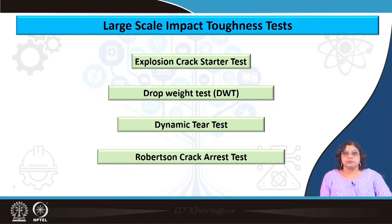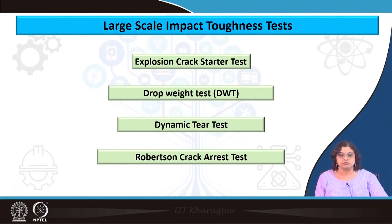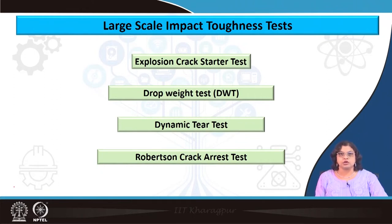When we talk about large scale impact toughness tests, practically we look for bigger specimens — of equivalent size to the components used in service. For lab scale tests, the Charpy impact test is mostly used, or sometimes Izod, which is equivalent to Charpy. But for large scale tests, we need a bigger block of material to find the properties of the actual test component. Particularly for brittle failure, the size or volume of the component is a real issue, since properties from smaller specimens often do not match larger service dimensions.